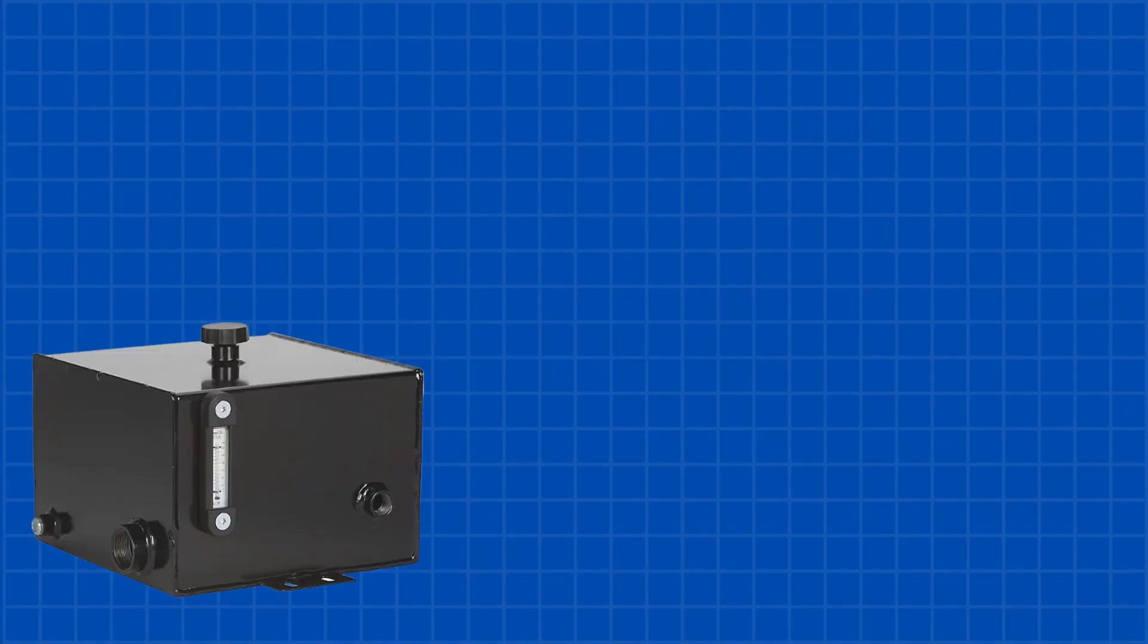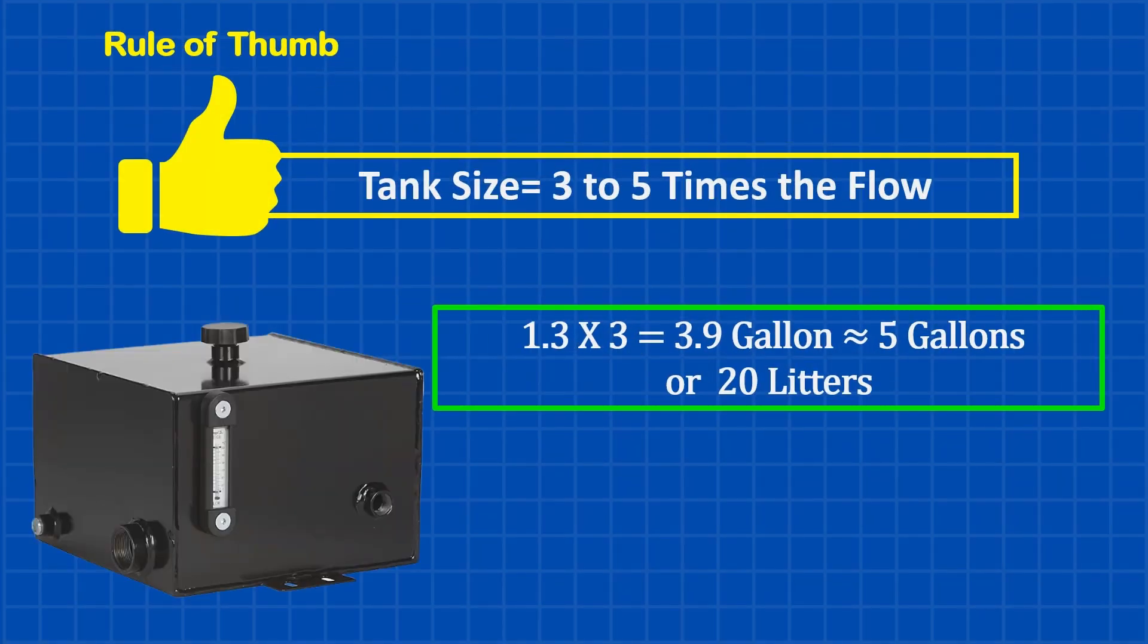Now that we know the GPM, how do we figure out the right tank size? A good rule of thumb for tank size is 3 to 5 times the flow, but that can vary depending on cycle time and how the oil is cooled. Since our flow is 1.3 GPM, we'll go with a tank size that's 3 times the flow, which comes out to 3.9 gallons. In reality, a standard tank size would be 5 gallons or about 20 liters.